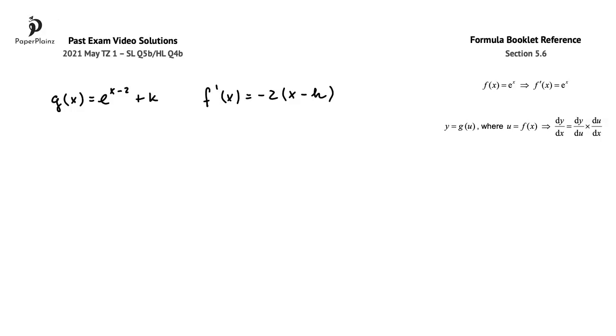In this question, we are told that f and g have a common tangent at x equals 3, and we have to show that h is equal to e plus 6 over 2.